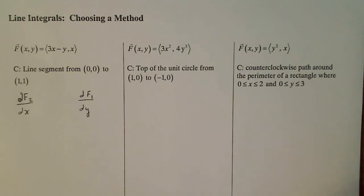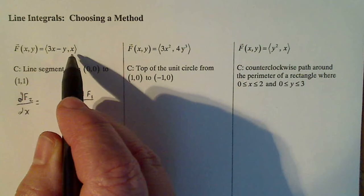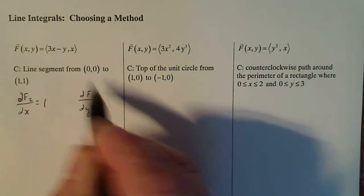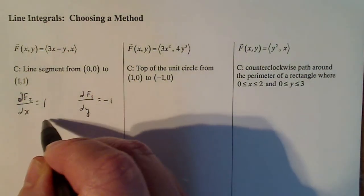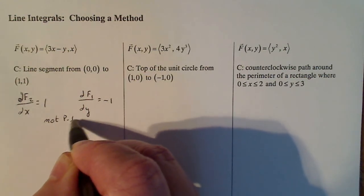So let's test path independent vector field first. So, the partial of f2 with respect to x here is 1, and the partial of f1 with respect to y is minus 1. So this is not path independent, and I'm going to use pi for path independent.